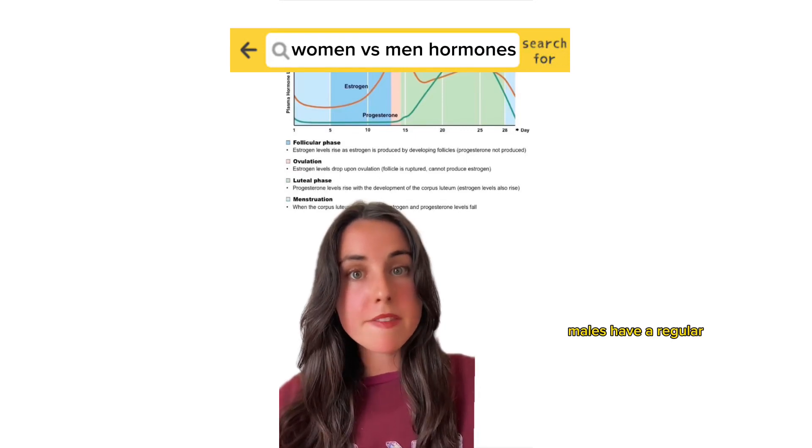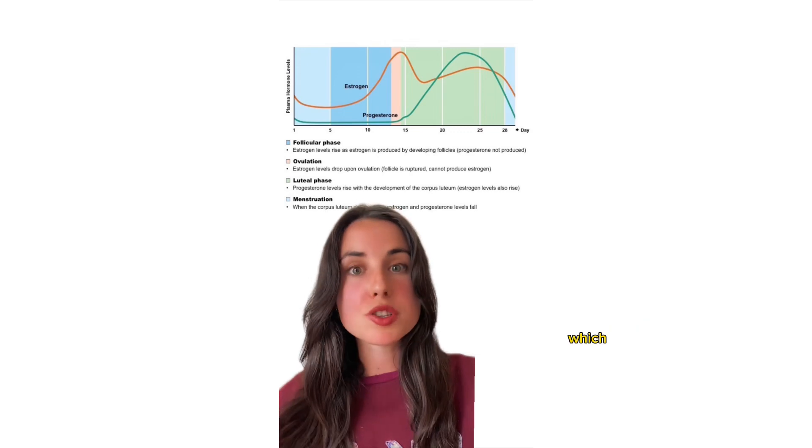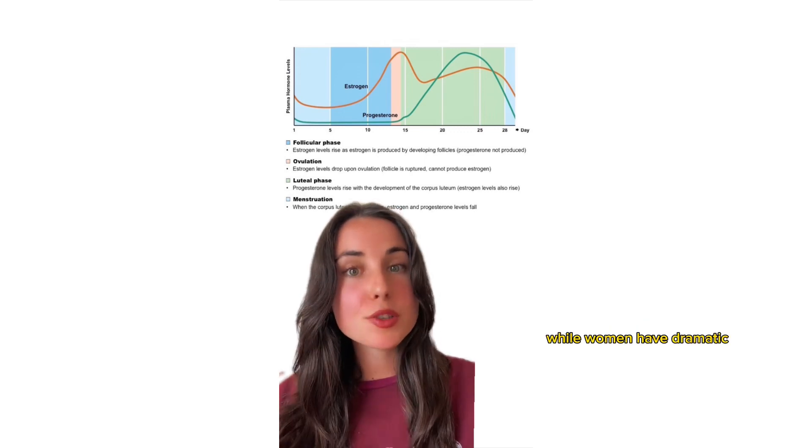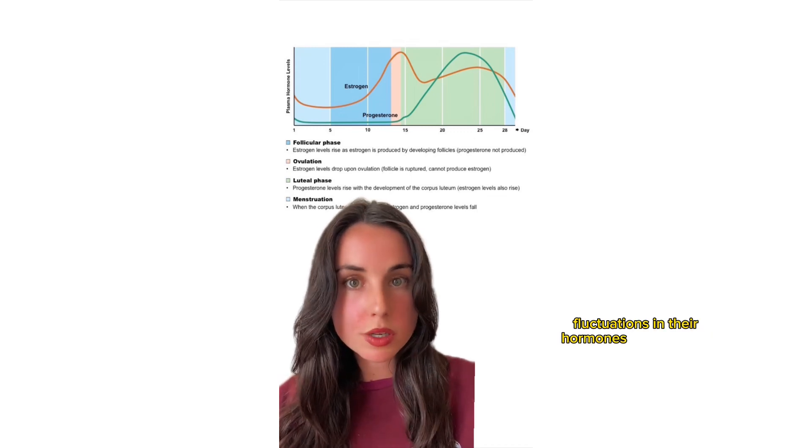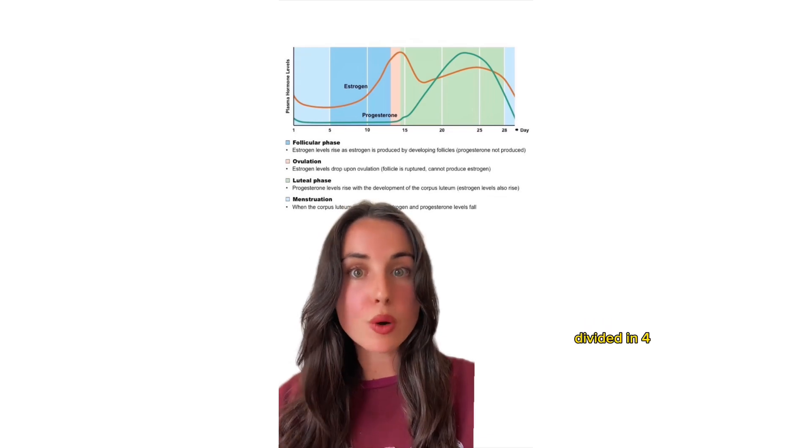Males have a regular variation in their most important hormone, which is testosterone. While women have dramatic fluctuations in their hormones for an entire month, divided in four phases.